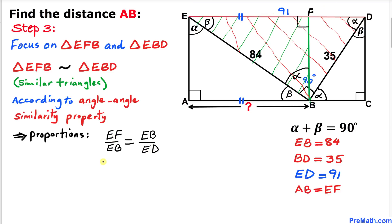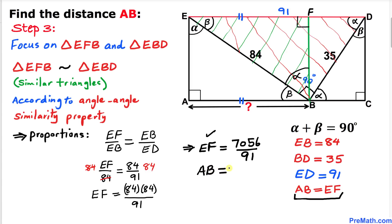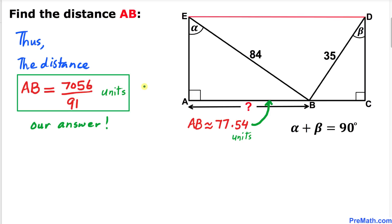Filling in the values: EF divided by 84 equals 84 divided by 91. Multiplying both sides by 84, EF equals 7056 divided by 91. Since AB equals EF, AB equals 7056 divided by 91.